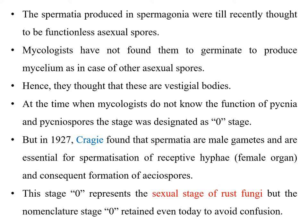In 1927, researcher Craigie found that spermatia are actually male gametes with an essential function in the life cycle: they are required for spermatization of the receptive hyphae, which serve as the female sex organs, and are necessary for the consequent formation of aeciospores. Craigie recognized this important function, but to avoid confusion, the name and the stage 0 designation remained unchanged. It now represents the sexual stage of this rust fungus.